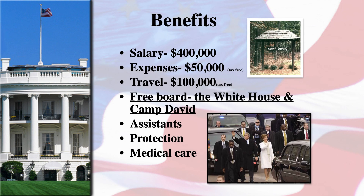Some of the major benefits that any president enjoys while in office: they make a salary of $400,000 per year, and are given a significant series of other expenses and monies to do their job effectively. They are given residency in the White House and also in Camp David, which is more of a recreational leisure home that may be used to entertain foreign dignitaries or members of state. They are also given a very significant number of assistants, 24/7, 365-days-a-year protection from the Secret Service — which typically carries over for the next 10 years to life — and very high-quality medical care on-site at the White House.